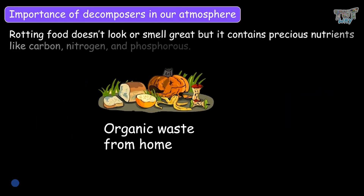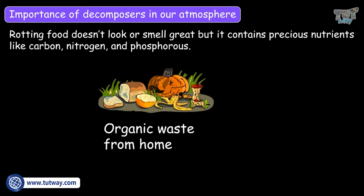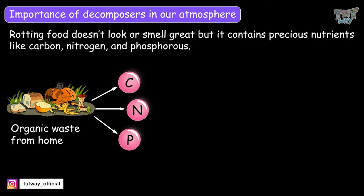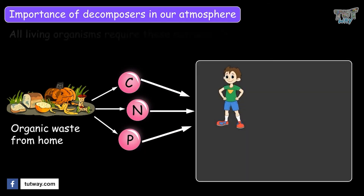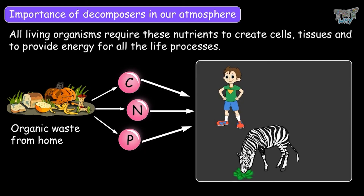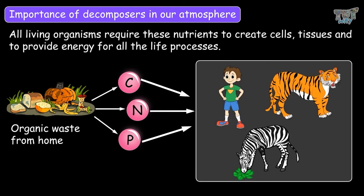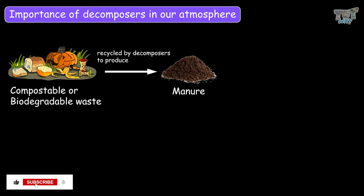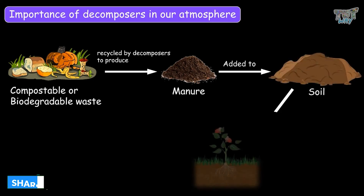Rotting food doesn't look or smell great, but it contains precious nutrients like carbon, nitrogen, and phosphorus. All living organisms require these nutrients to create cells and tissues and to provide energy for all living processes. All types of biodegradable waste from living organisms is broken down and recycled by decomposers to produce nutrients which are returned to the soil, and more food is grown.